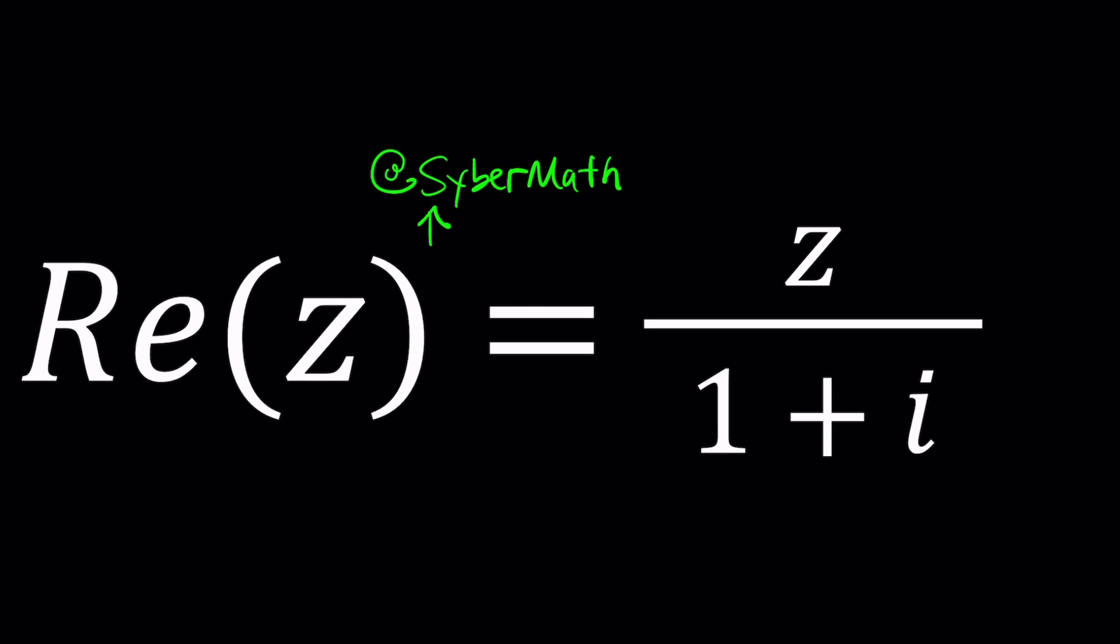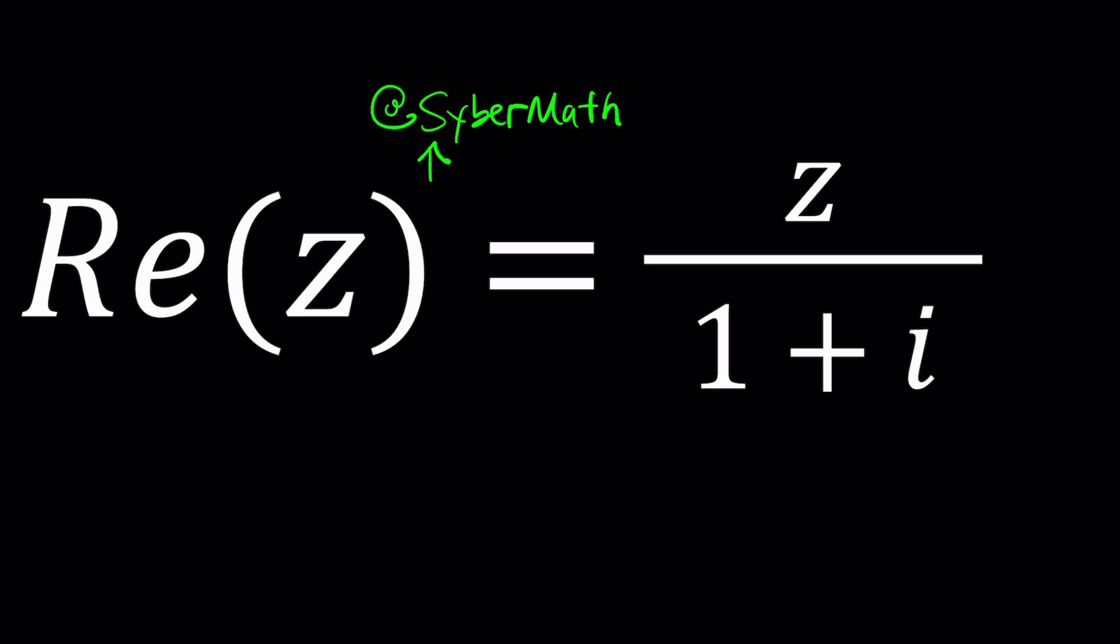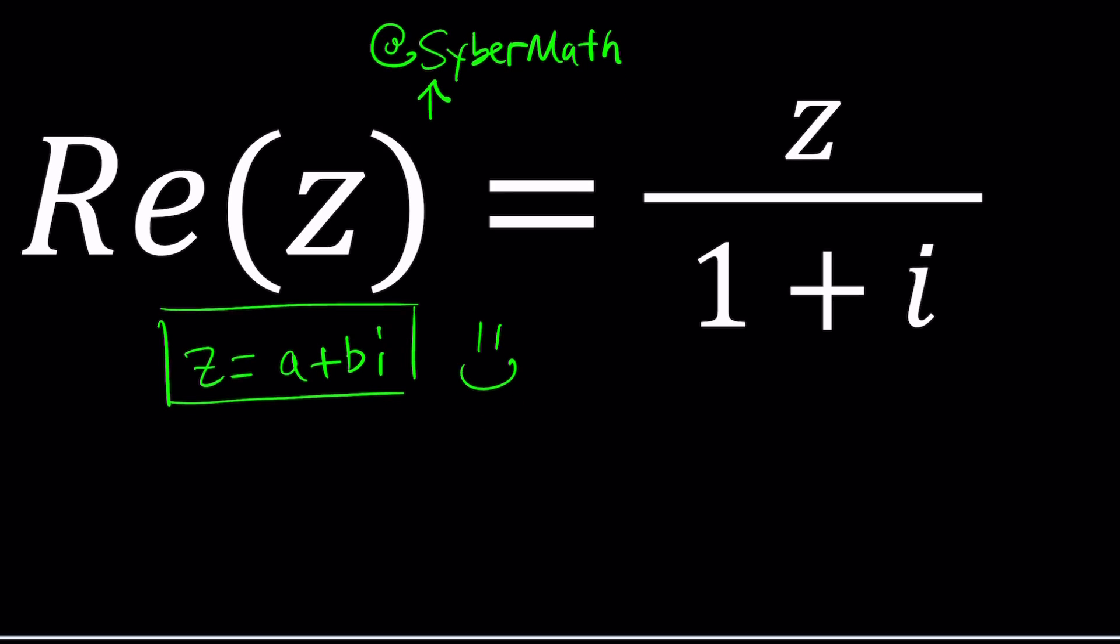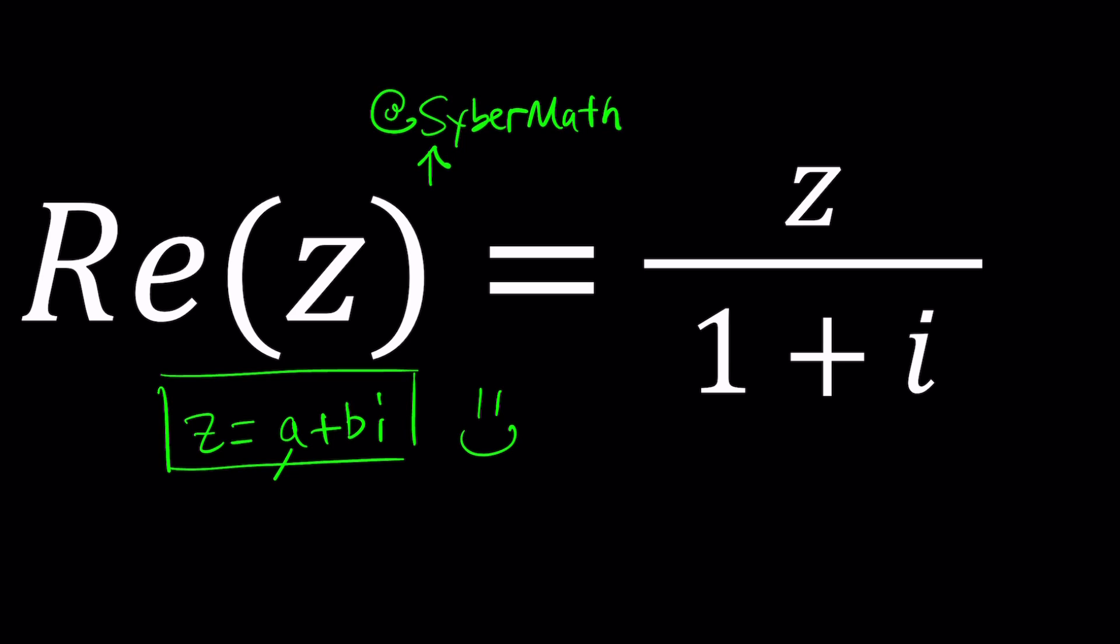So complex numbers in a nutshell are numbers that can be written in two dimensions. A complex number can be written as z equals a plus bi or x plus yi, any letter you use. But a plus bi is very important because it's the name of this channel. Obviously a is the real part of z and b is called the imaginary part of z. Notice that imaginary part does not contain i because both the real part and the imaginary part are real numbers.